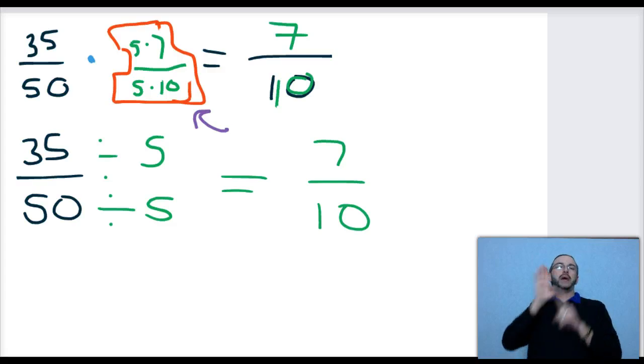So again, to wrap up, we just figured out how to do equivalent fractions, how to make a number larger, and then how to reduce a number to its lowest terms. Make sure you have all of these in your math notebook, and good luck with the rest of your homework.